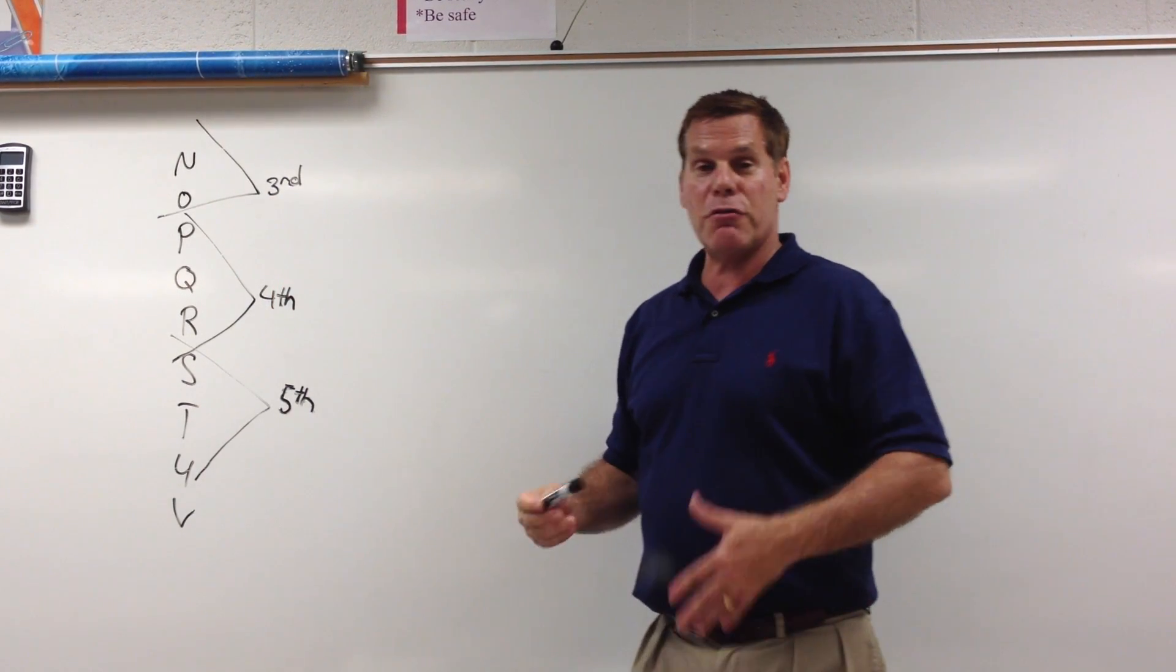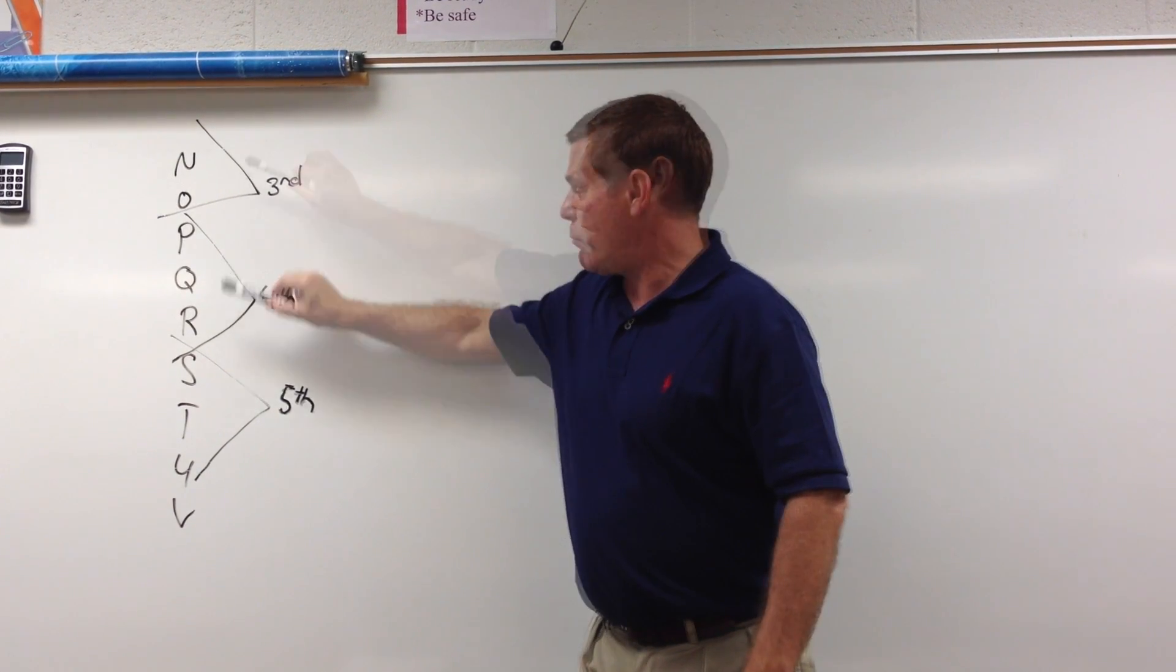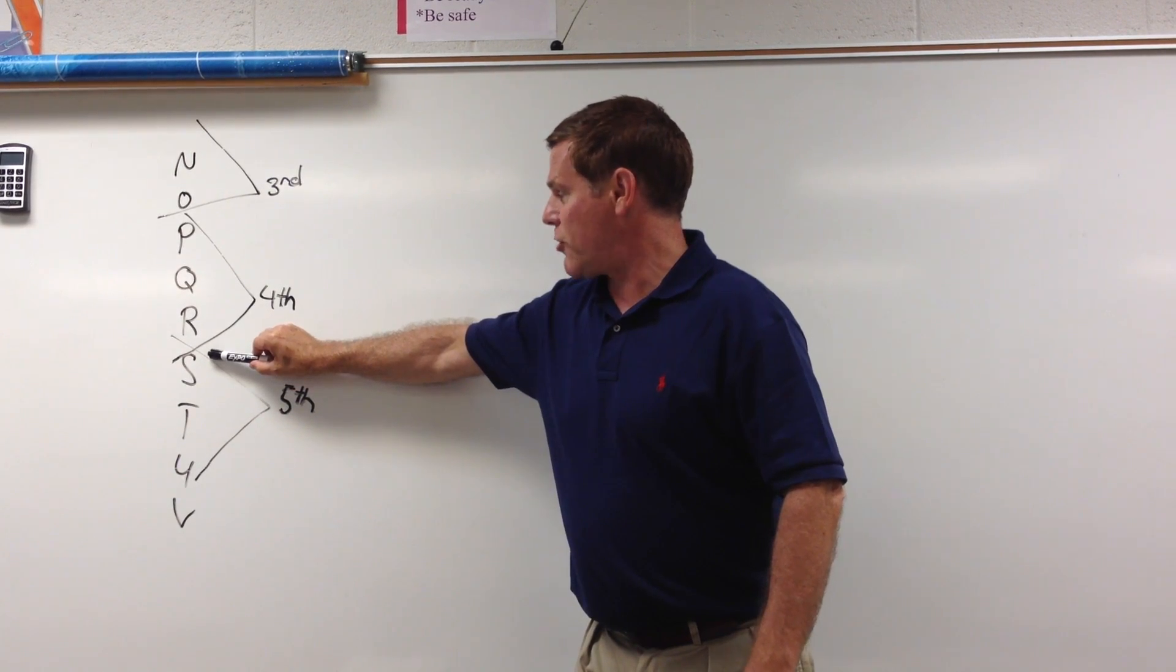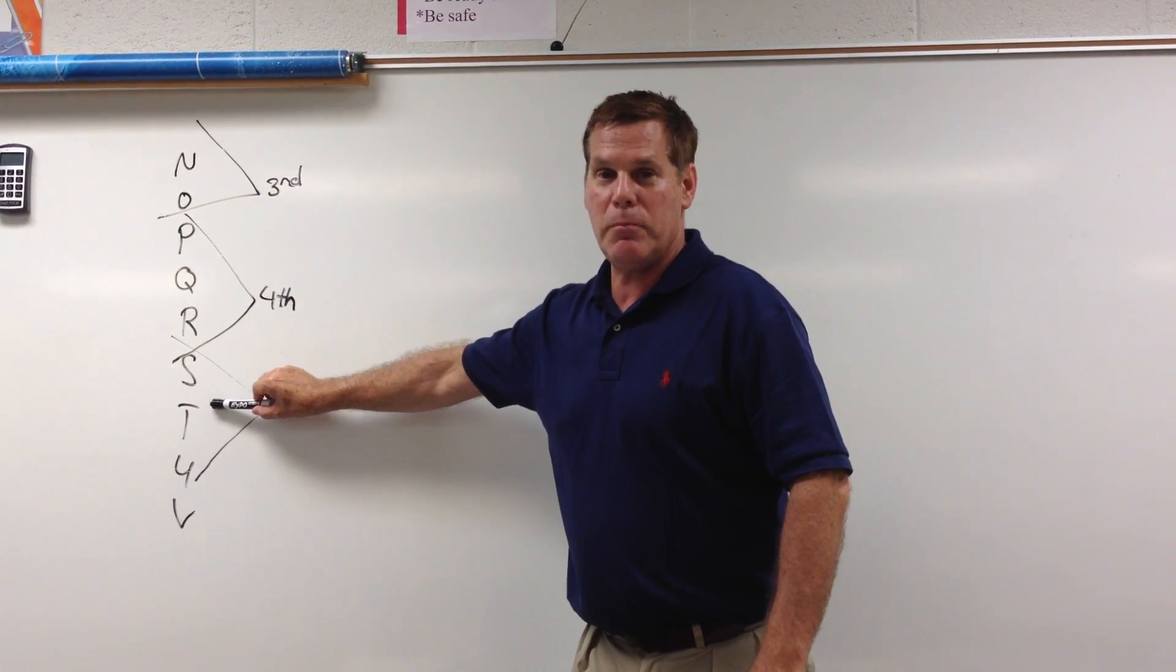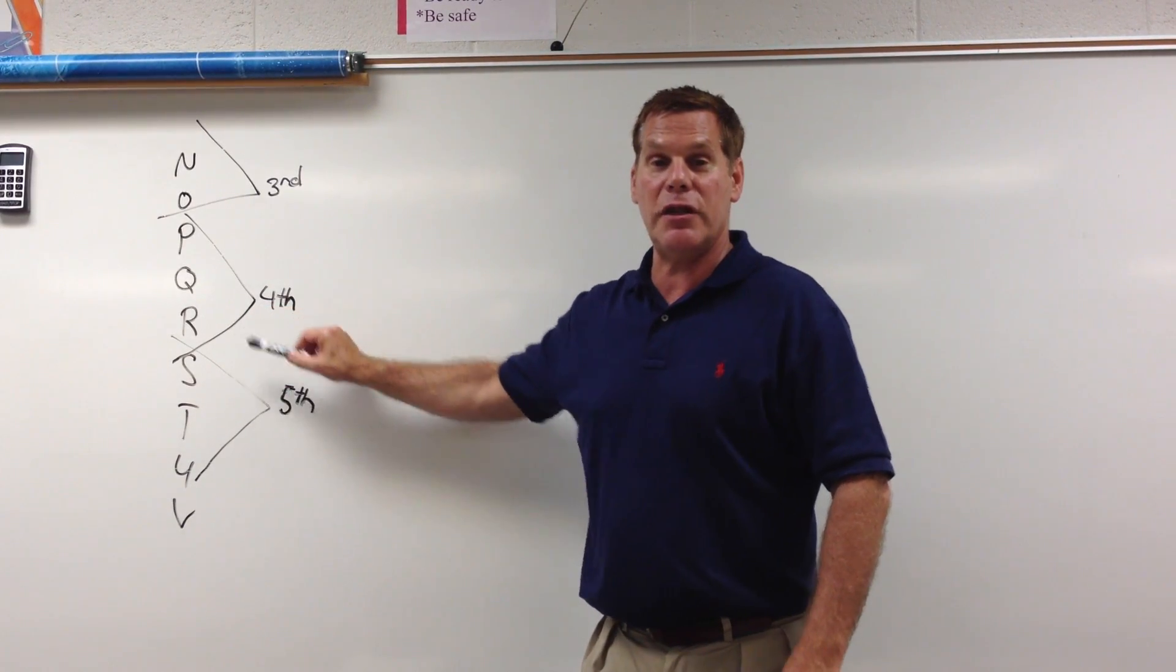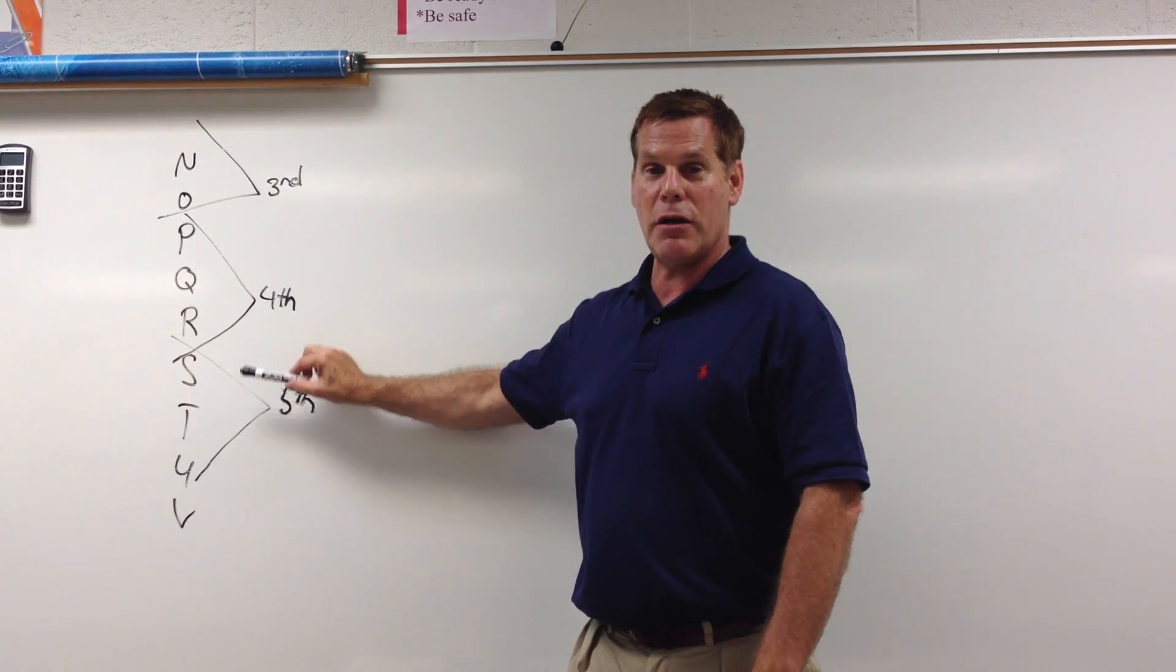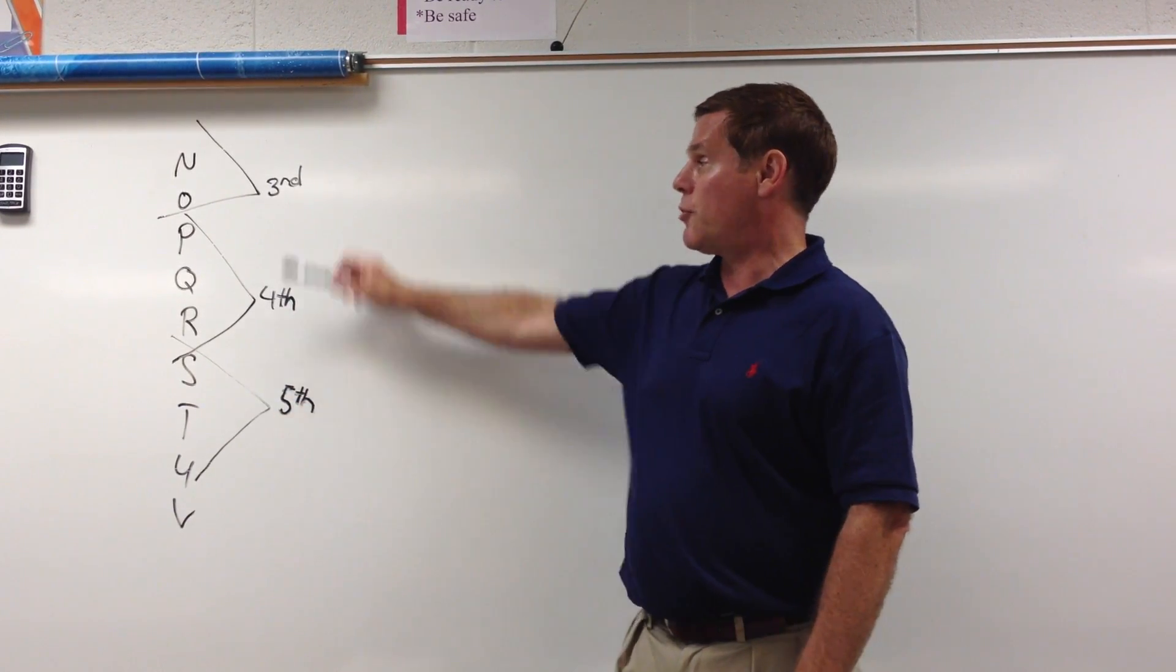In fifth grade, when the students come into fifth grade, we're hoping that they're an R. Fifth grade for us is going to be an S at the beginning of the year, T by the middle of the year, and a U by the end of the year. These are kind of C grades. If they want to achieve more than a C, they have to be reading at a higher level. These are kind of the minimums.